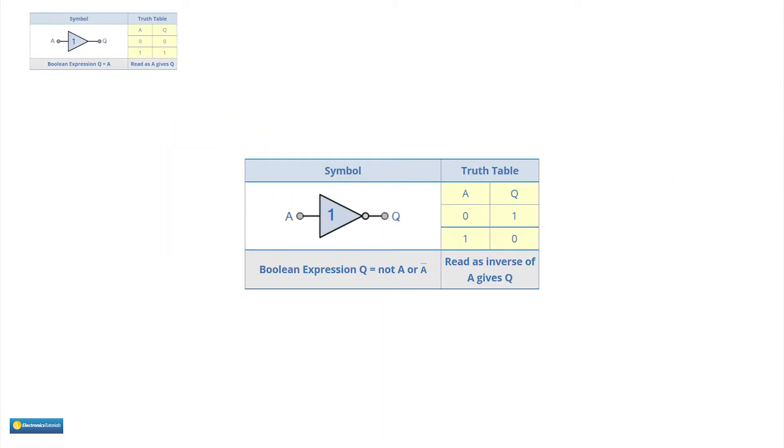This is called an inverter. Its job is to invert. The truth table for the inverter is input 0, output 1. Input 1, output 0.